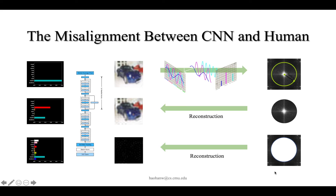As we can see, significant misalignment between humans and the models is observed. What we consider similar to the original image is predicted to be something else, and what we view as pure noise is predicted to be the same label.